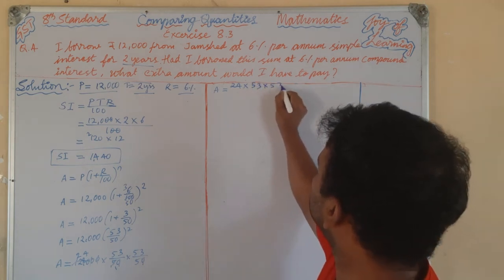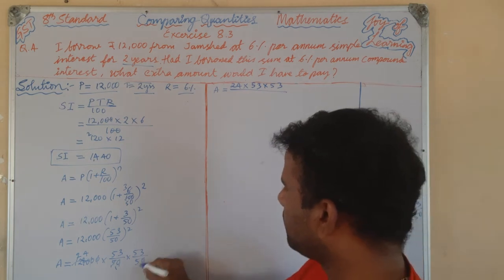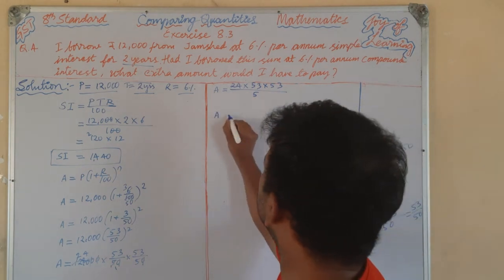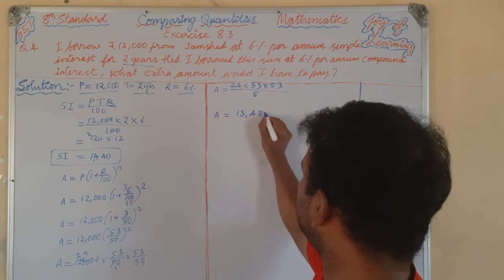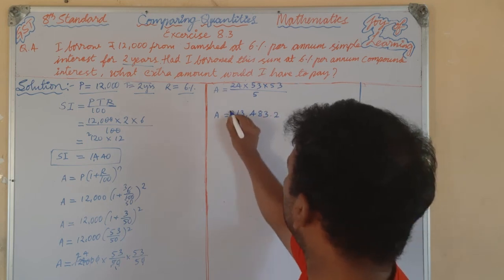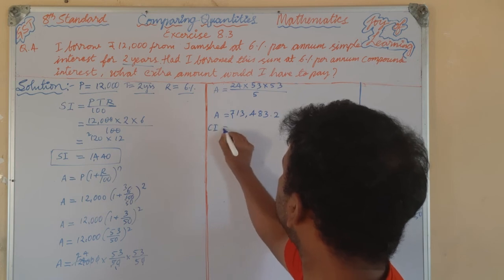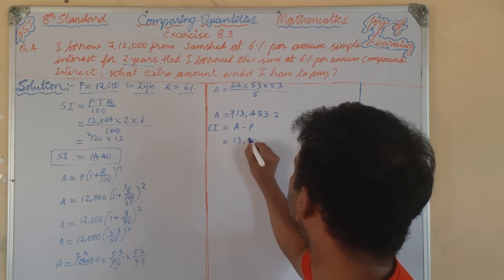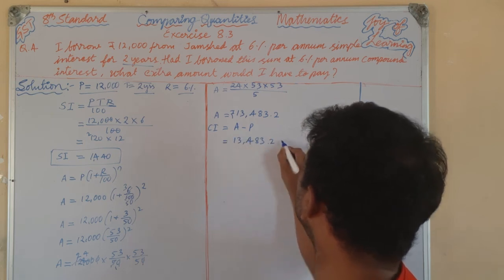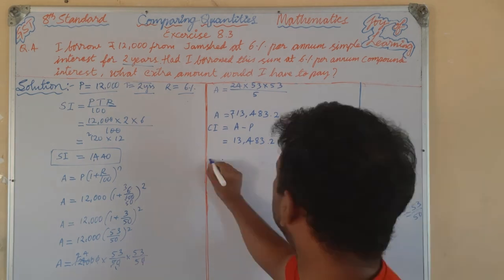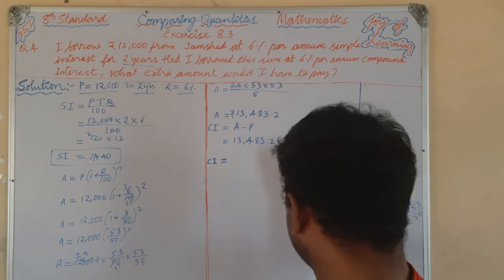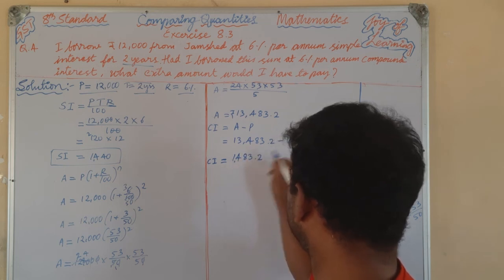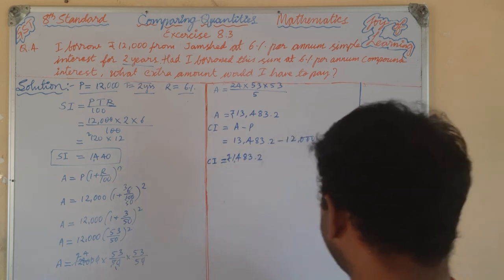Calculating that gives amount = 13,483.2 rupees. Compound interest is equal to amount minus principal: 13,483.2 minus 12,000, so compound interest = 1,483.2 rupees.